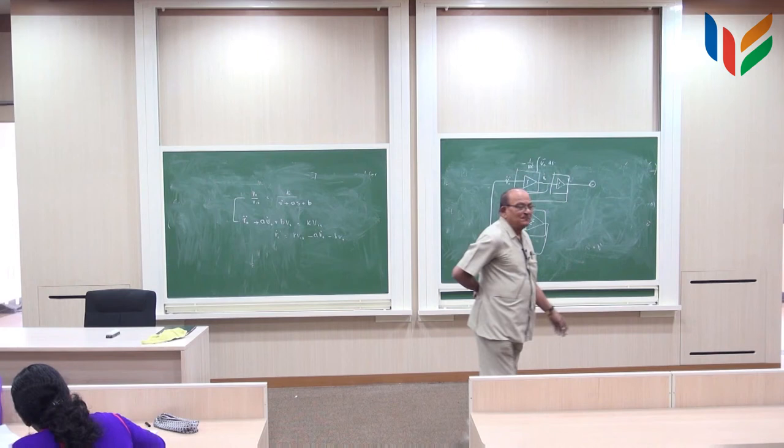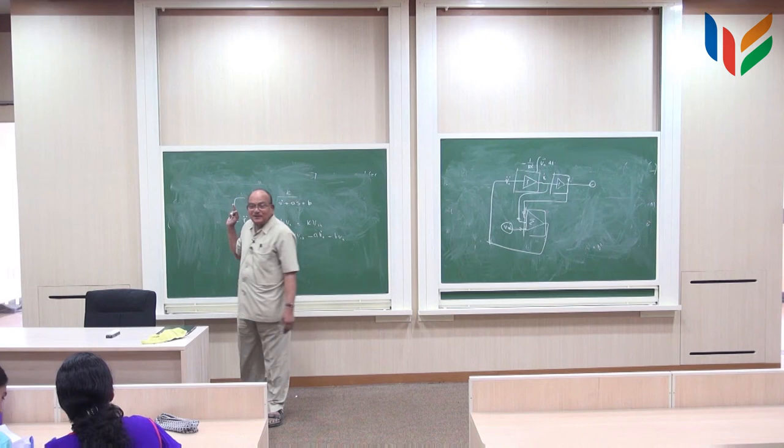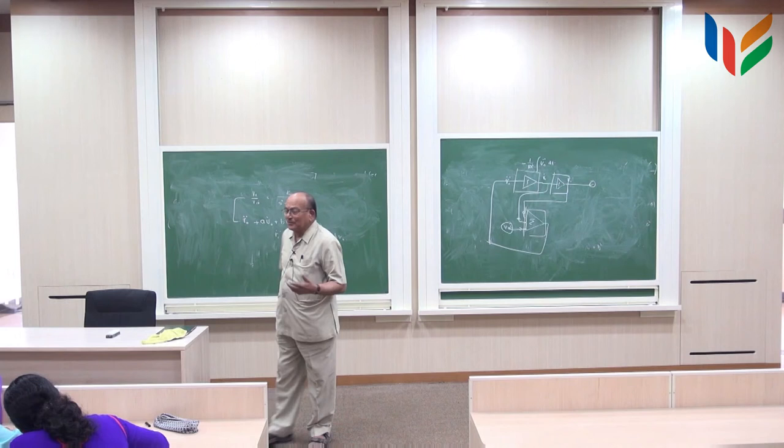So this is called the active filter structure. And this is, if you remember, this is nothing but the state space representation, right? So people call this as a state space filter. Instead of active filter, sometimes we call it state space filter.